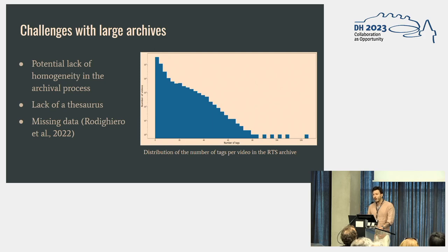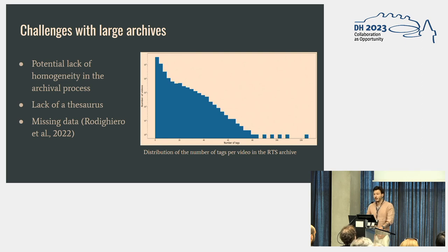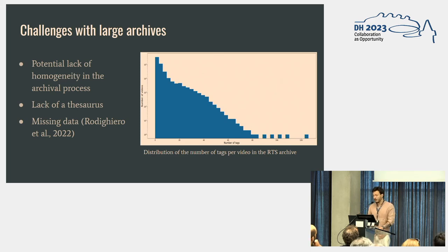This is where we encountered several challenges. First of all, there is a potential lack of homogeneity in the archival process. It's important to note that RTS, being a broadcasting company, their main goal is not to produce a well-curated cultural archive — it's primarily for their own use. Furthermore, it's a process that changed over time, so we can expect differences in the coverage process over the decades. There's a lack of thesaurus control, so the tags are not very controlled. And there's also the issue of missing data — as you can see in the graph, a lot of the videos do not have tags at all. For this specific work we don't really consider this aspect, but in future works we will address that.